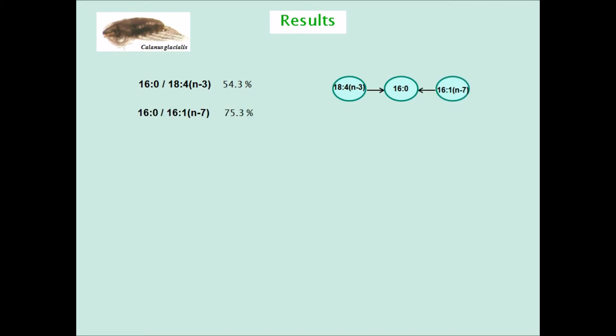The next ratio chosen brought explained variance up by another 20 percentage points, more than 20%, to 75.3%. And it also has 16.0 in the numerator. So the fatty acid on the right points again to 16.0.